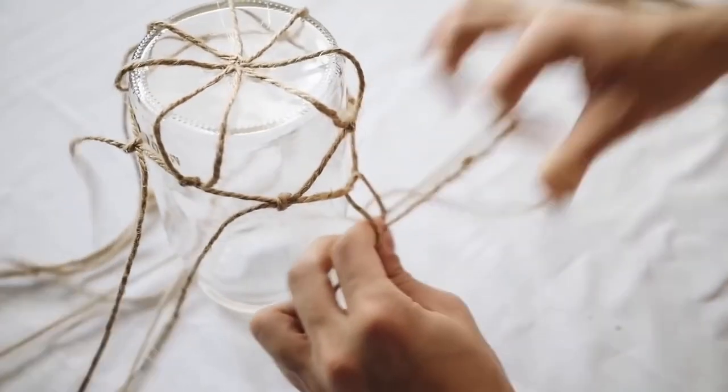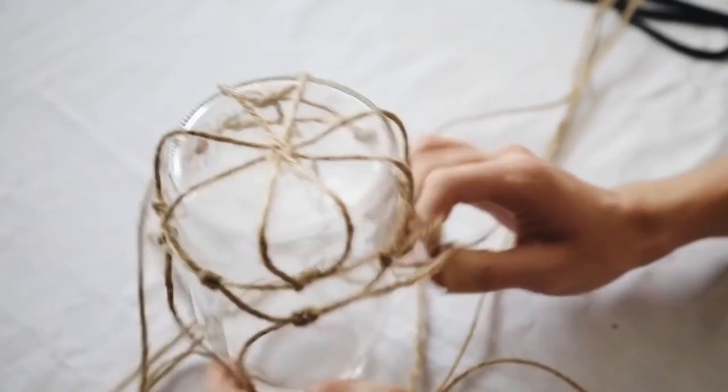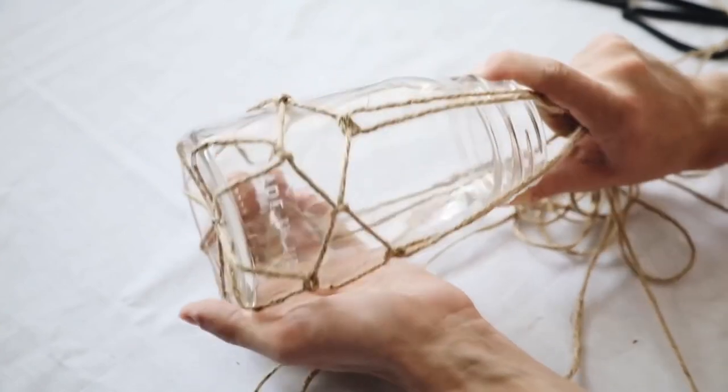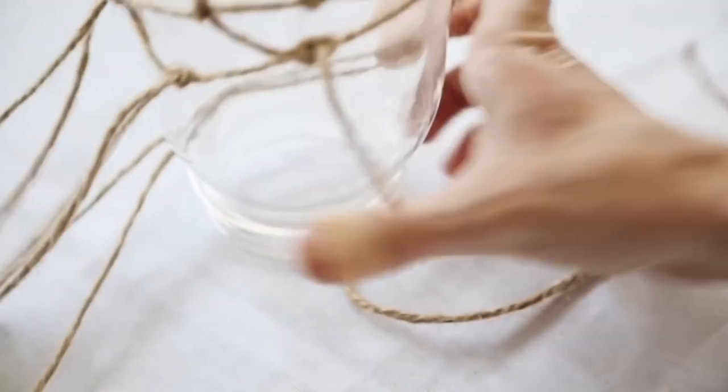I just work in a circle and create a knot, as you can see here. Twist it, move on to the next side, create a knot, twist it, move on to the next side. As you keep creating these knots, it's going to get tighter and tighter toward the top, which is what you want so that it forms around your mason jar shape.